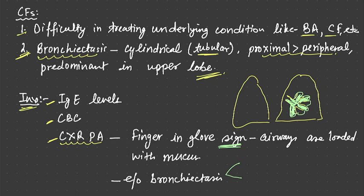One is the signet ring sign. Second is the tram track sign. They are basically present because of dilatation and destruction of the bronchioles secondary to repeated infection and inflammation.